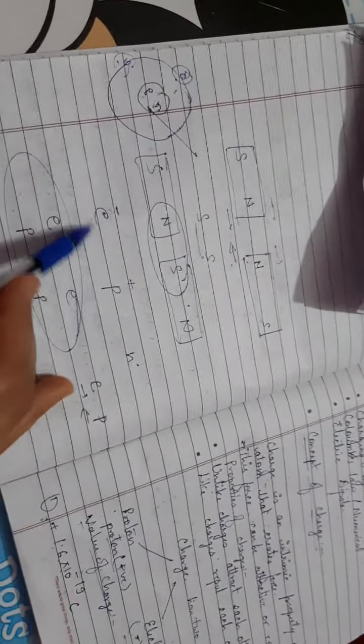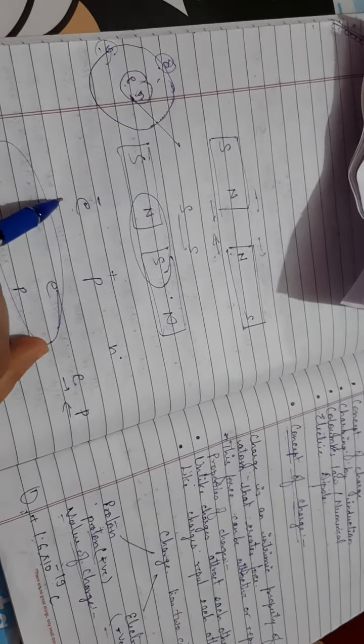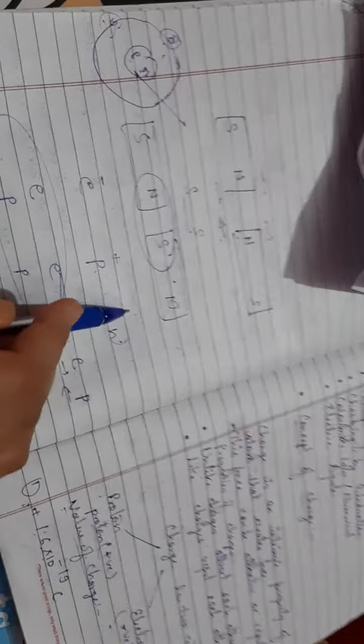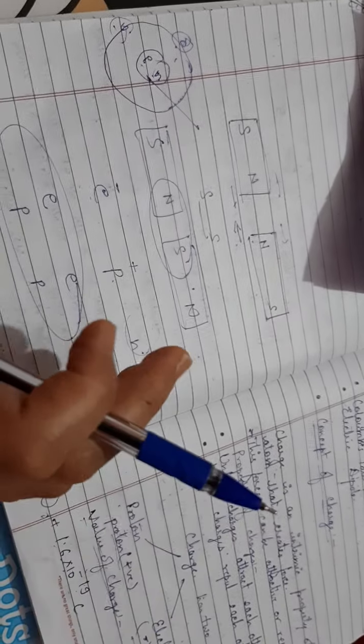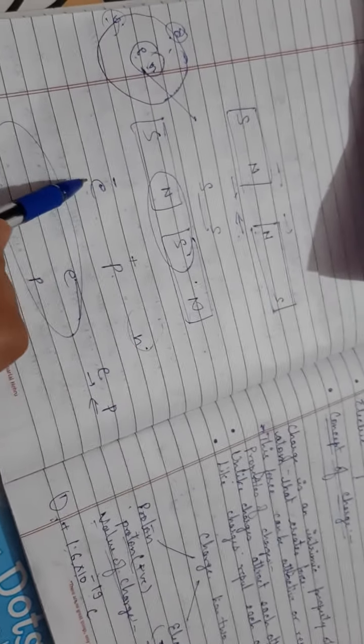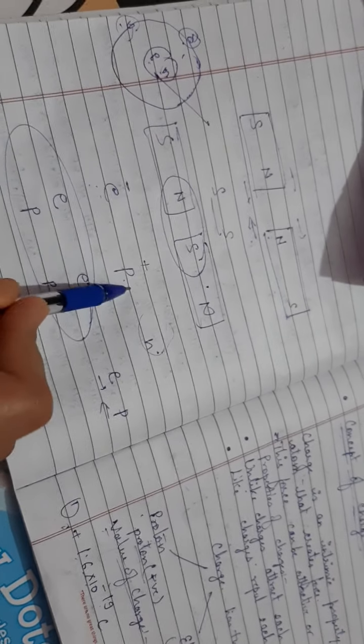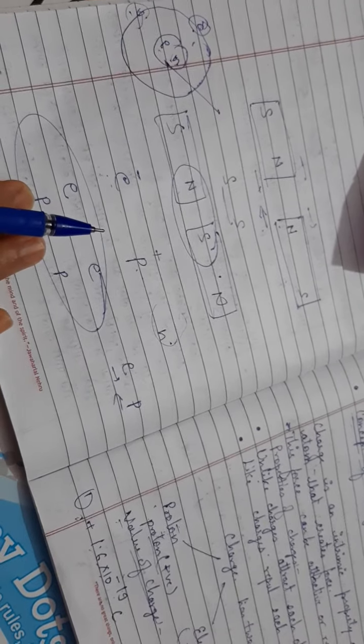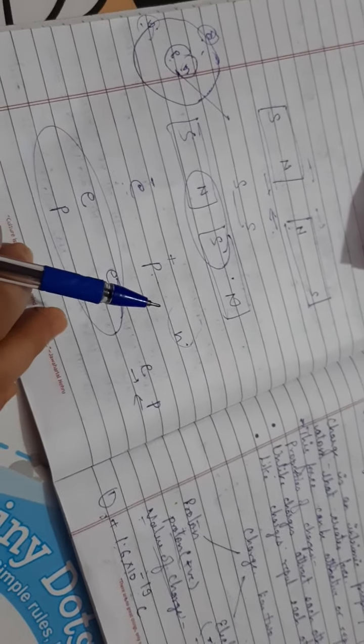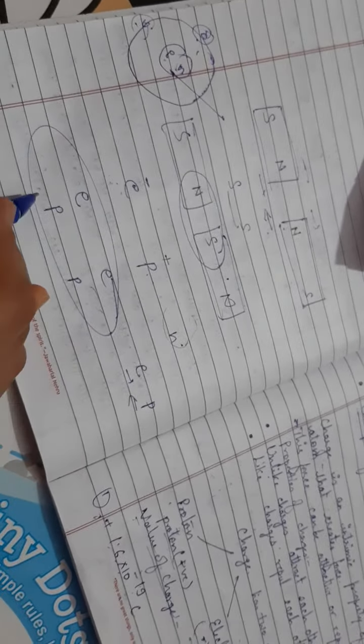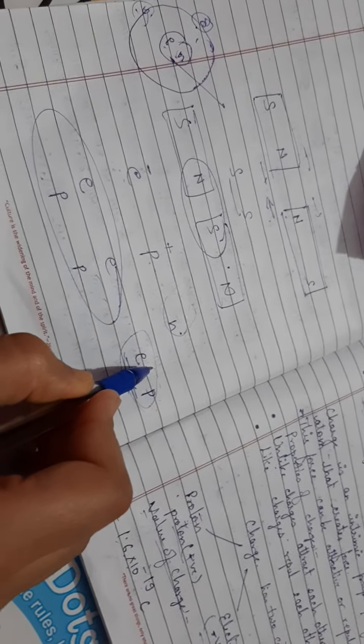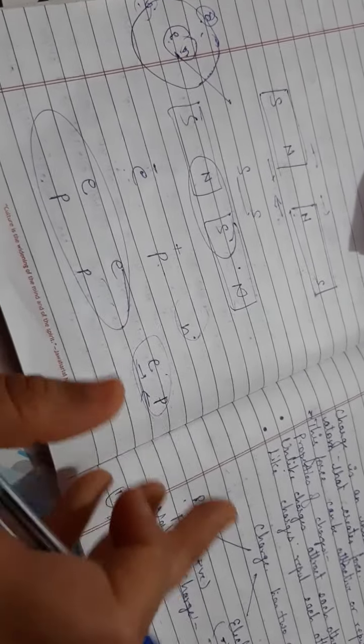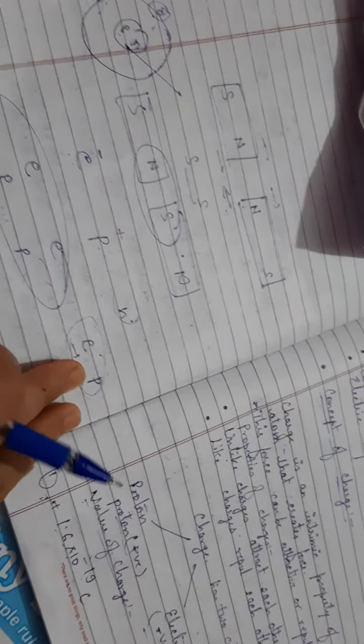The same thing arises when we take fundamental particles electron and proton. We will not take neutron because it is neutral and has no charge. Electron has negative charge and proton has positive charge. When electron-electron or proton-proton come close, they will repel each other. If we take unlike particles like electron-proton, they will attract each other.